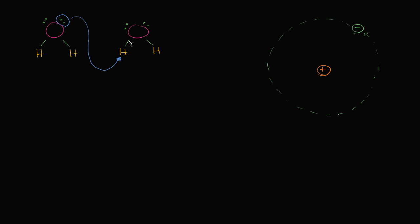You can imagine these electrons in this covalent bond were already being hogged by this oxygen. In fact, that's what was forming this partial negative charge over here and the partial positive charge over here. So these would be attracted to this partial positive charge. There's a partial negative charge over here — it's forming the hydrogen bond. It actually could bond to the hydrogen proton while both of these electrons, including one of these electrons that used to be part of this hydrogen, are nabbed by this oxygen.